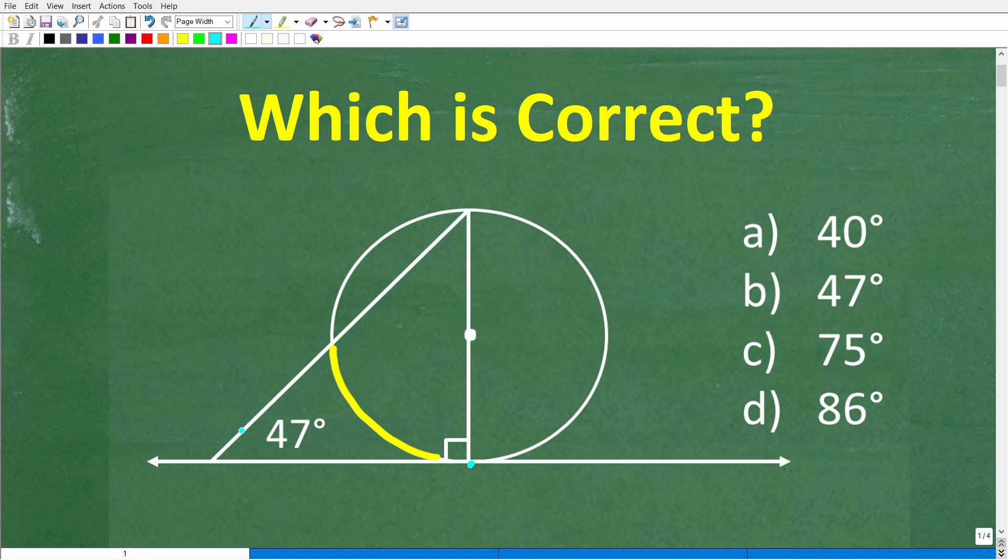Now, tangent is a fancy word that means this line touches a circle exactly at one point right there. That's the point of tangency. So this is what we would call a tangent line. We have this part of the triangle which is a diameter because it's running to the center of the circle. Then we have this lovely triangle being formed.